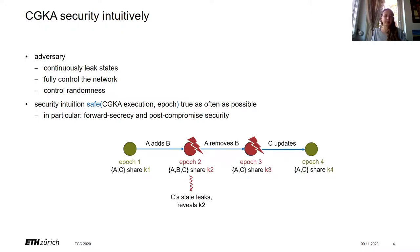As an example, if Cindy's state leaks in some epoch, this inherently compromises some epochs. But for forward secrecy, we want past epochs to not be affected. And for post-compromise security, we want that if Cindy goes online and sends some messages, then the group heals and future epochs are safe again.